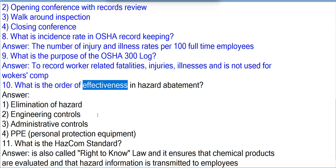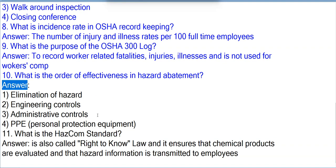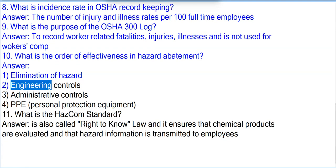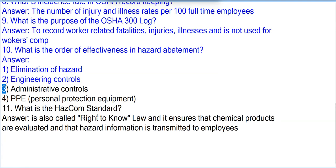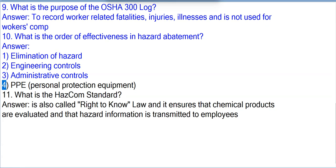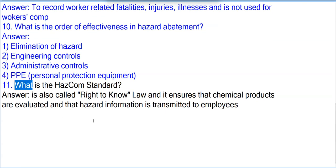Question 10: What is the order of effectiveness in hazard abatement? Answer: 1. Elimination of hazard; 2. Engineering controls; 3. Administrative controls; 4. PPE — personal protective equipment.